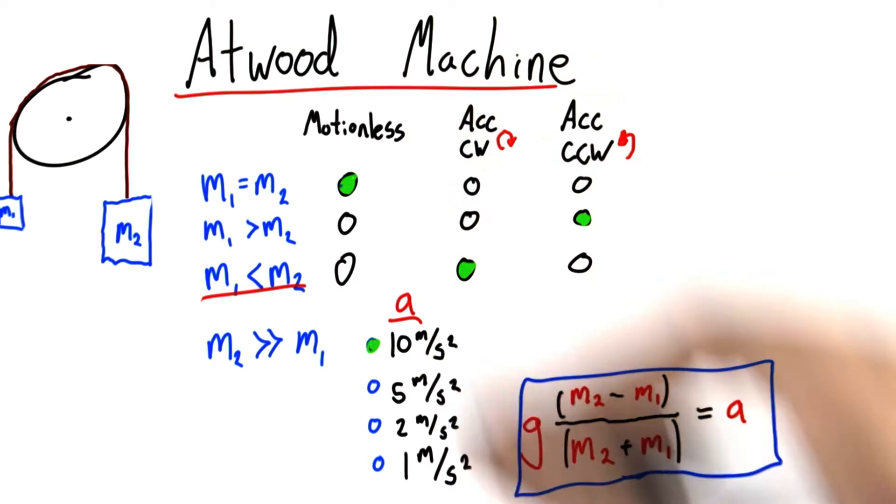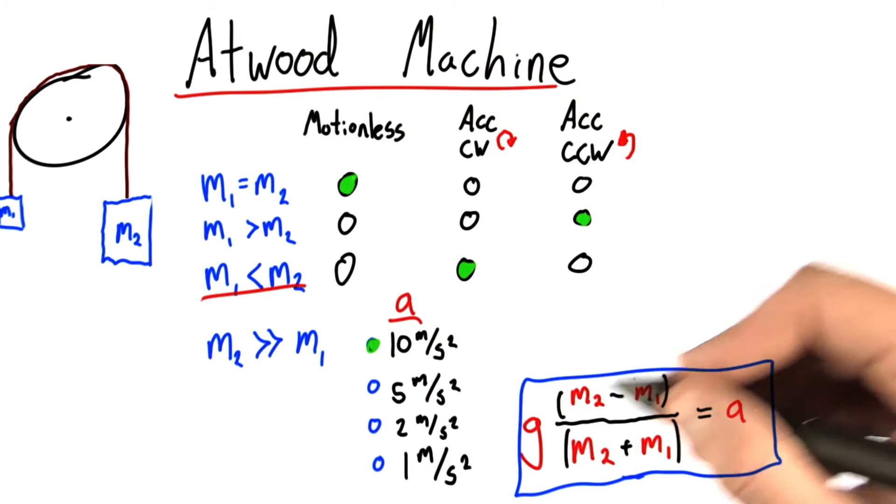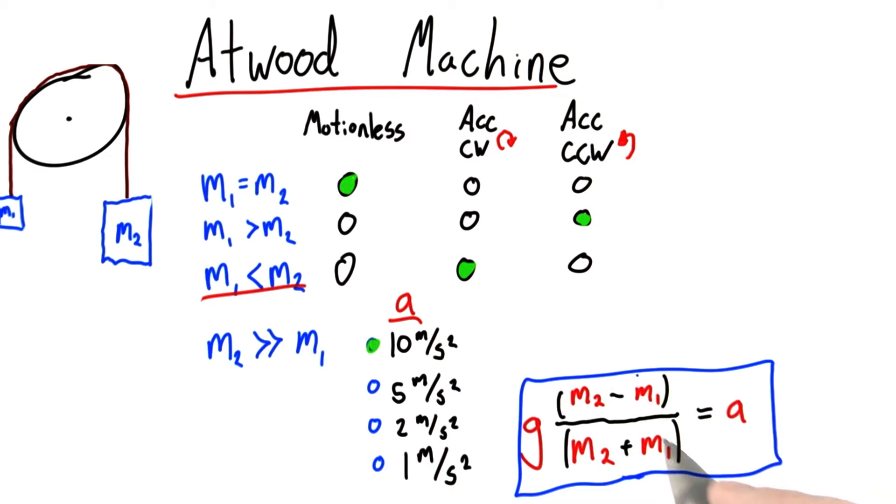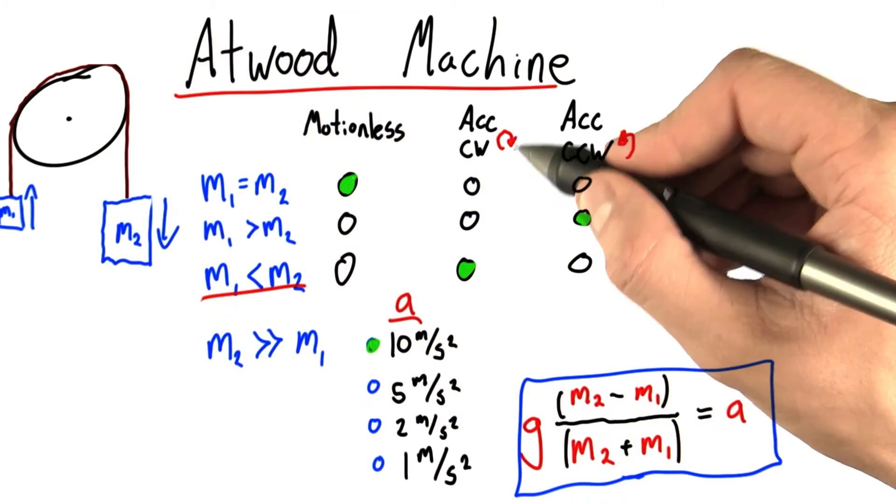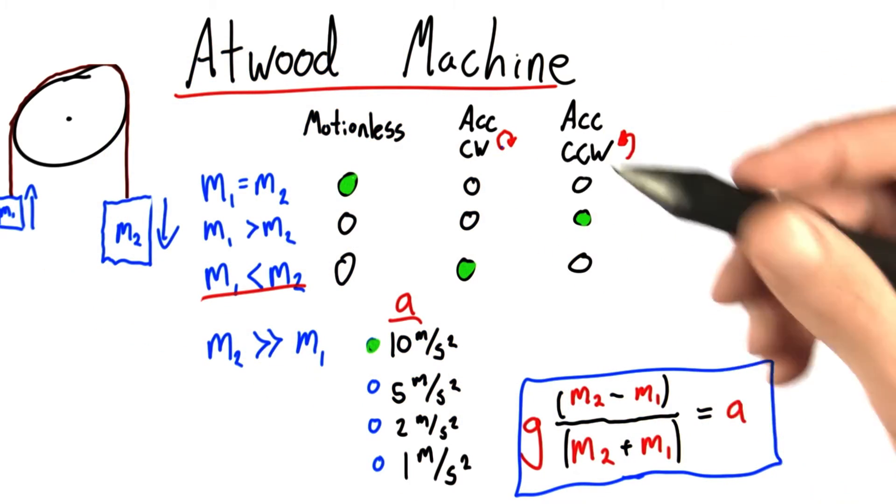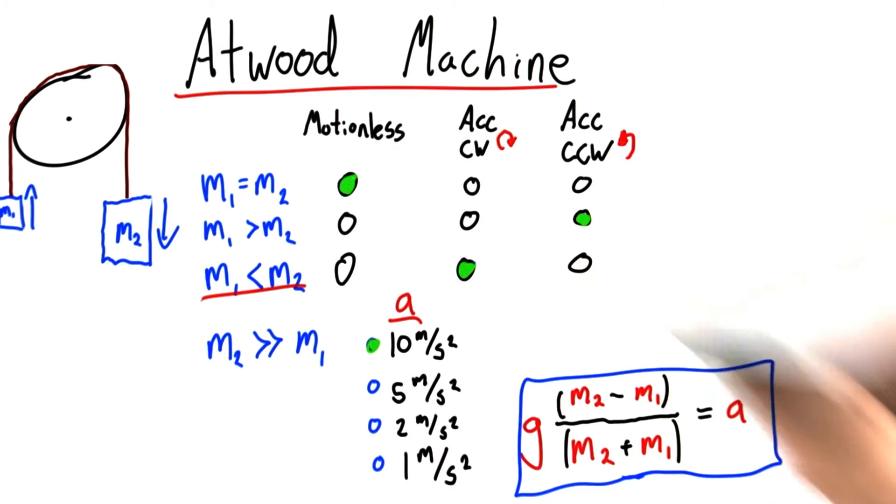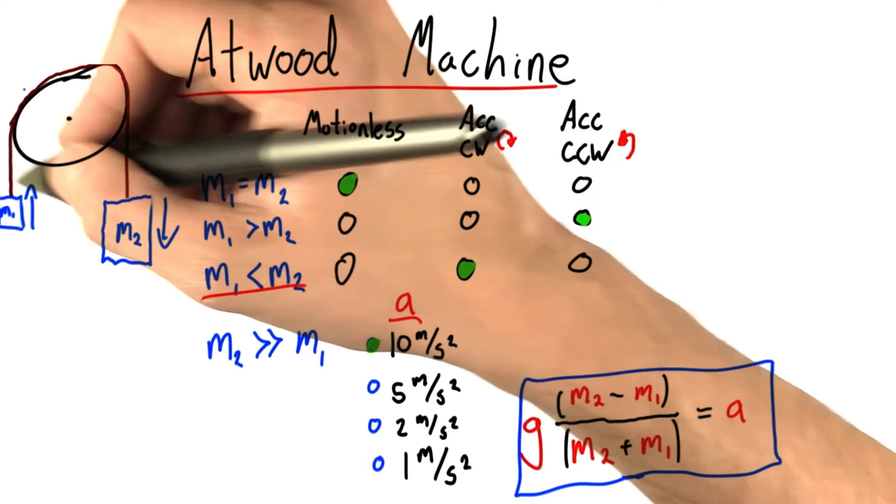Exactly like we expected. If m2 is bigger than m1, well, this will be positive in the denominator. That means we'll have positive acceleration, which we defined as clockwise, exactly what we expected when m2 is greater than m1. Likewise, if m1 is greater than m2, it'll be negative, which becomes counterclockwise.